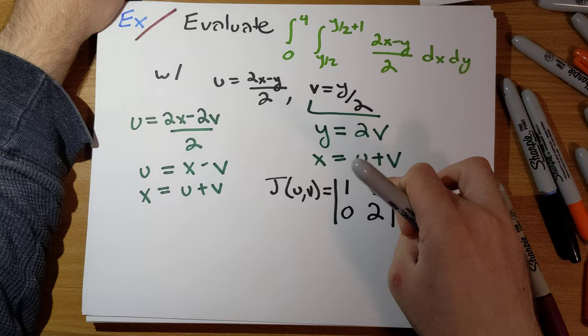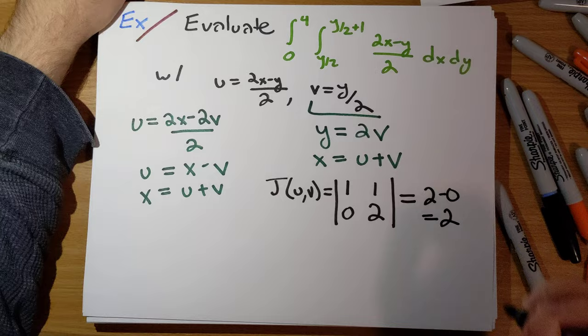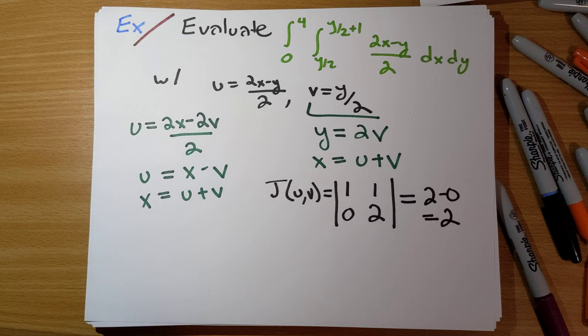1 times 2 minus 0 times 1. 2 minus 0 is 2. We see here that this is going to be a linear transformation. And it has constant Jacobian as expected.